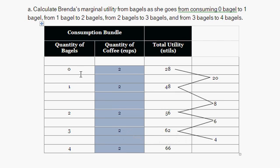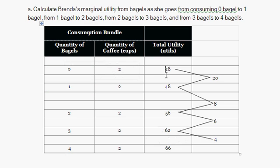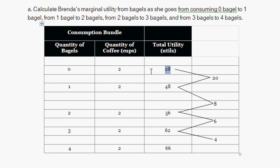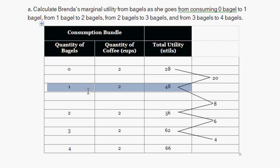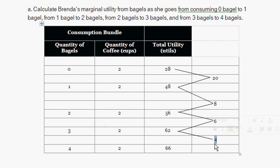Given two cups of coffee is fixed, the marginal utility going from zero bagels to one is the difference between 48 and 28. 48 utils is the utility Brenda gets from one bagel and two cups of coffee, and 28 is the total utility from two cups of coffee and zero bagels. So the marginal utility of the first bagel, given two cups of coffee, is 20. The marginal utility from the first to second bagel is 8 — the difference between 56 and 48 utils. Continuing: marginal utility from two to three bagels is 6, and from three to four bagels the marginal utility is 4.